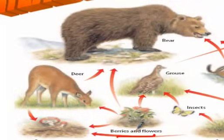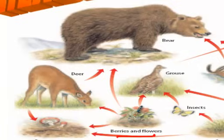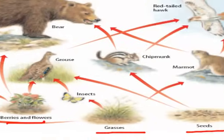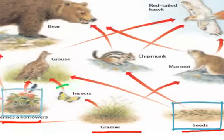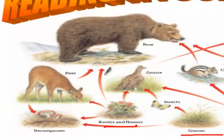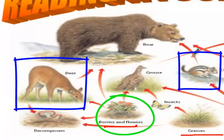The berries and flowers have arrows going to the grouse, the bear, and the deer. The grouse has energy flowing from insects and seeds as well, so it eats both plant matter and animal matter — making it an omnivore. The bear also receives energy from the deer and the chipmunk in addition to plants, so the bear is also an omnivore. You can write either of those two into your omnivore answer blanks.